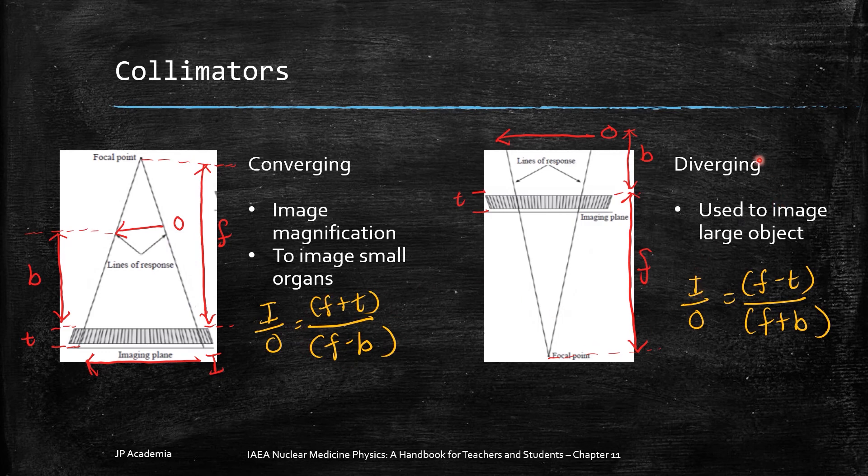For the diverging collimator, this is used to image large objects in small field of view camera. The image size with respect to the object size is equal to this ratio.